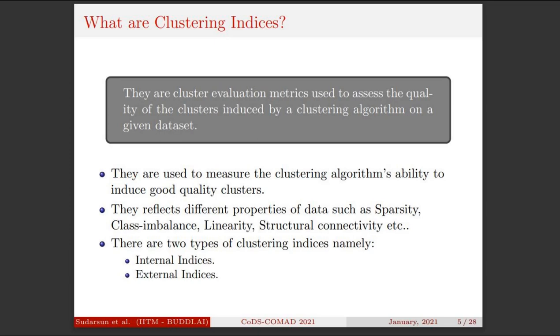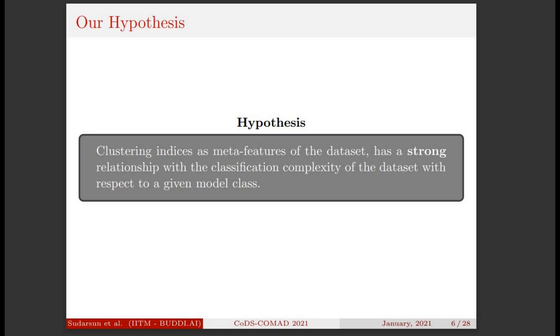Now, let us understand what are clustering indices. Clustering indices are evaluation metrics used to measure the performance of a clustering algorithm over a given dataset. They are a direct indicator of different properties of the dataset over which the clusters were formed. They can tell us how sparse our data is distributed, how inherently well separable our data is, and many more.